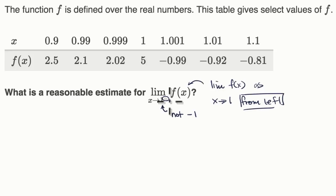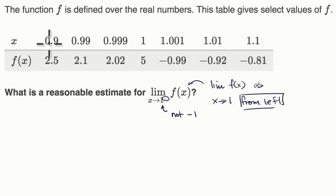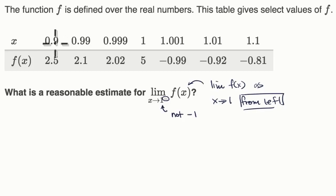So let's think about it. We want the limit as x approaches one from the left. And lucky for us, on this table we have some values of x approaching one from the left. Zero point nine, which is already pretty close to one.